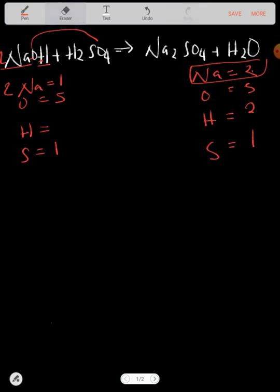Oxygen now has changed because there's two here plus four, it has changed to six. Now are we balanced with this side? Oxygen on this side is five.